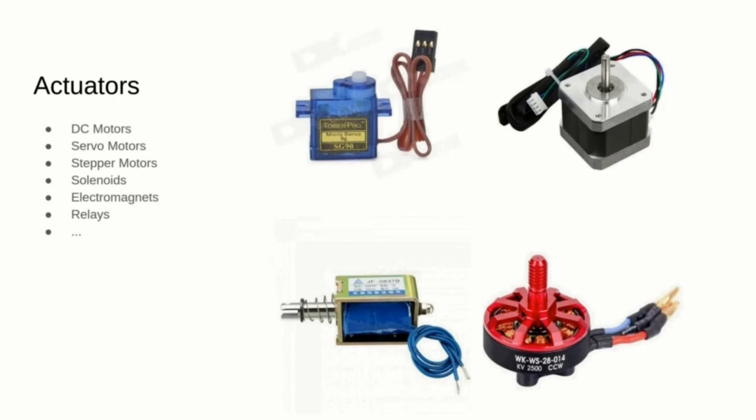Solenoids can be controlled with a single digital signal and they either retract or push a metal arm — if you've ever played a pinball machine, they are full of solenoids. Electromagnets are controlled by a single digital pin and have various usages like locks or levitation systems. Relays are used to control high voltage by manipulating a switch with an electromagnet that is controlled by a low-power voltage coming from an analog pin of a microcontroller.